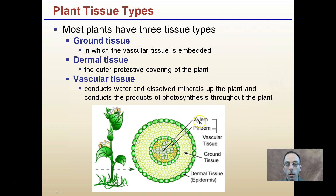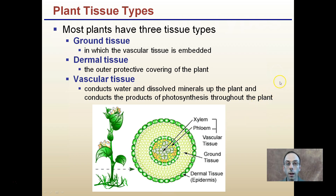So we can see them here — our xylem and our phloem are part of our vascular tissue. The dermal tissue is like the epidermis, and the ground tissue is this middle portion here. This is a cross-section of a plant's stem.